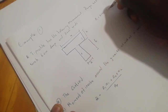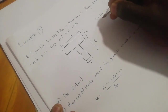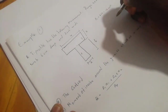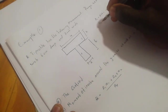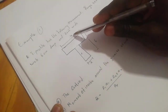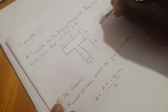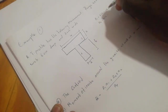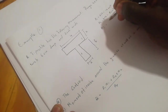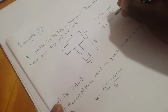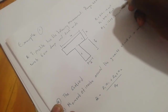Six multiplied by two gives us 12 square centimeters. Area number two equals four multiplied by two, which gives us 8 square centimeters. The total area is 12 plus 8, which equals 20 square centimeters.